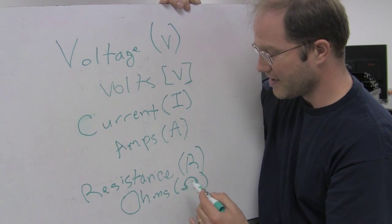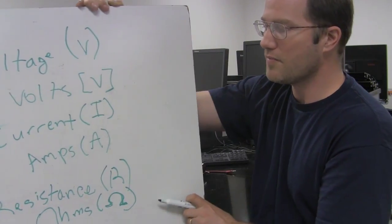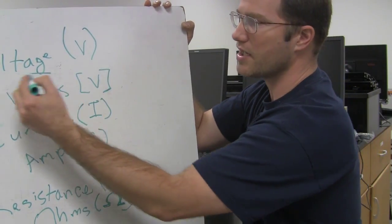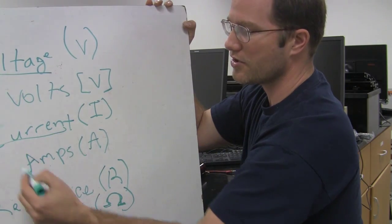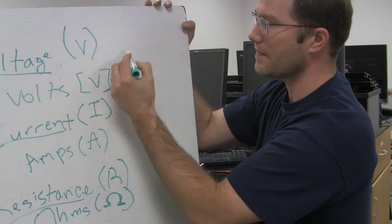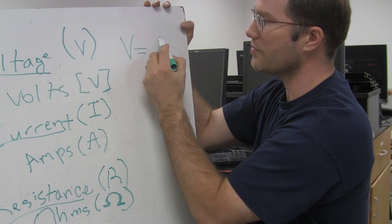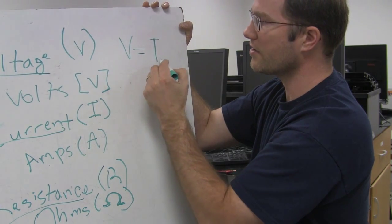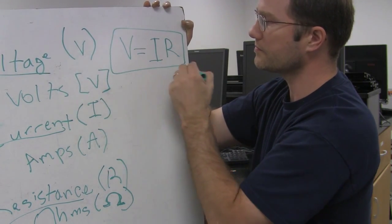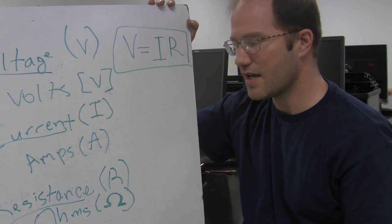So these are the quantities we'll be using. Ohm's Law says that the relationship between these three quantities — voltage, current, and resistance — goes like this: voltage is equal to the product of current and resistance. V is equal to IR.